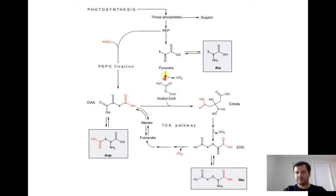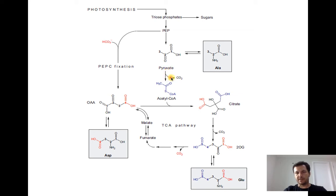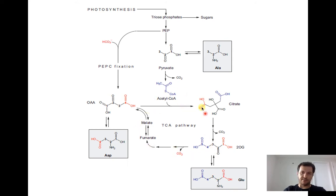One carbon in glutamate comes from that PEP carboxylase reaction. The blue carbons come from glycolysis — triose phosphate, phosphoenolpyruvate, pyruvate. In the TCA cycle, pyruvate is decarboxylated by pyruvate dehydrogenase, and two carbons enter. Together with oxaloacetate, this produces citrate (six carbons), one carbon is lost, and the remaining two blue carbons end up incorporated into glutamate.